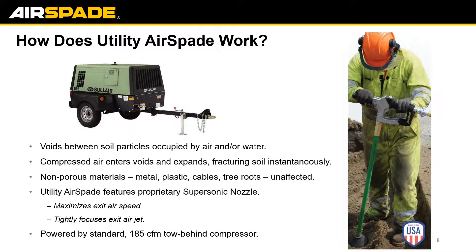The foundation of the Air Spade is really an air compressor. We show a 185 cubic feet per minute CFM compressor here because it's the most common. The compressor generates the air needed for the Air Spade to work properly. Once that compressed air hits the soil, the soil is made up of soil and air particles, so the air particles move and the soil is dislodged, helping excavate. No non-porous material such as metal, plastic, sensitive cables, or even tree roots will be affected. It's a completely safe way to excavate — even safer than using a shovel, as that can cause many damages.